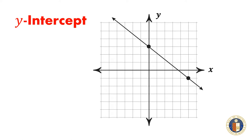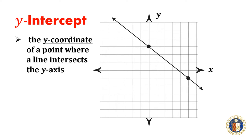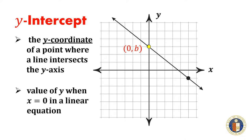The y-intercept is the y-coordinate of a point where a line intersects the y-axis. It is the value of y when x is equal to 0 in a linear equation.